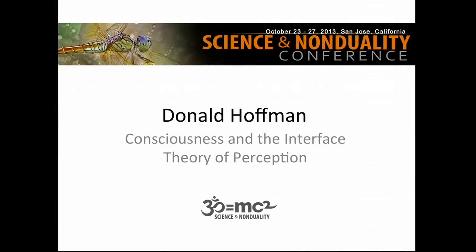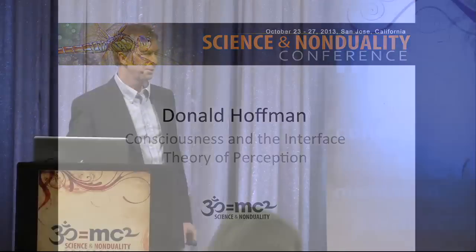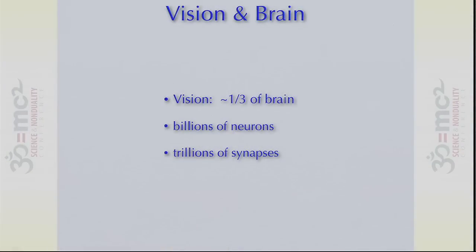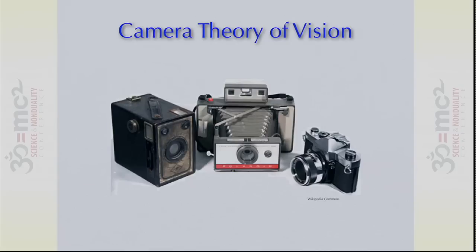Today I'll talk about consciousness and the interface theory of perception. One-third of your brain's cortex is engaged in vision. When you simply open your eyes and look around, you're using billions of neurons and trillions of synapses just to see the world in this room. This might be surprising to most of us because, to the extent that we think about vision at all, we think of it as like a camera — just taking a snapshot of a world that exists out there, with objects, colors, shapes, and motions.